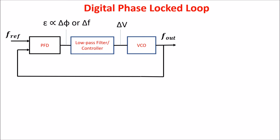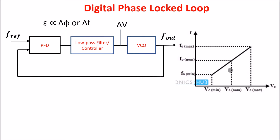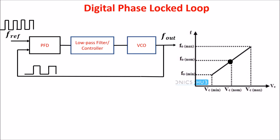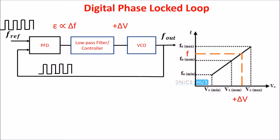The third block is the voltage-controlled oscillator, an electronic oscillator designed to produce an oscillation frequency controlled by an input voltage. There is an operating point at which, for the nominal input voltage, the VCO produces the nominal output frequency. If the reference frequency is higher than the output frequency, the PFD produces an error signal proportional to the frequency difference, causing an increase in the VCO input voltage, which produces a higher oscillation frequency. If the higher frequency matches the reference, the error signal becomes zero and the system is locked. Otherwise, the process continues until the output frequency matches the reference. The DPLL keeps adjusting the VCO input voltage to stay locked to the reference frequency.